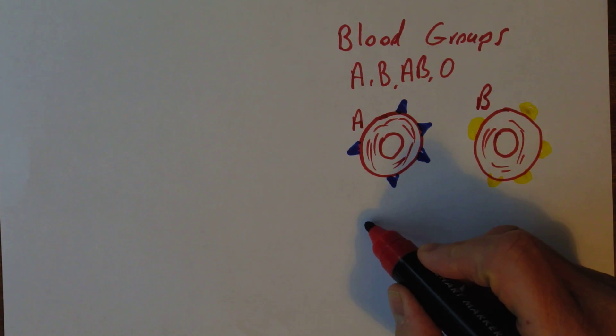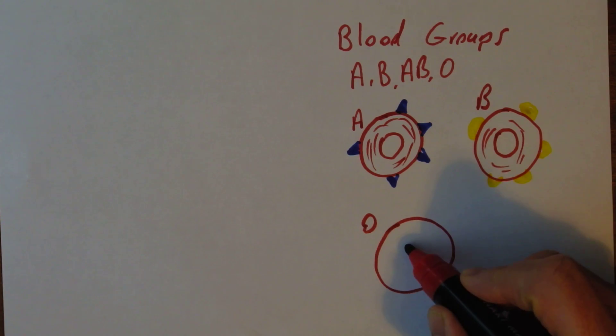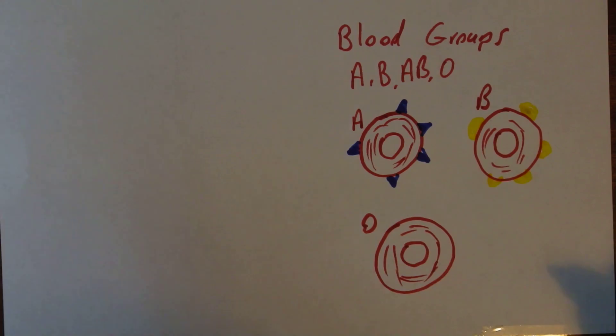Now blood group O is actually blood group zero. O is a corruption of zero. The cells look the same, but there are no antigens on the surface of the cell.